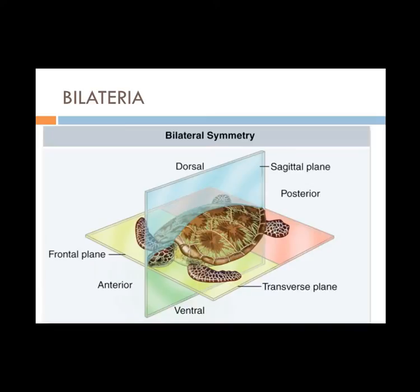The bilaterians are all the other phyla. They have bilateral symmetry, which means you can divide their bodies into a plane from head to tail. They have a dorsal side, which is the top, a ventral side, which is the bottom, an anterior head, and a posterior tail. They also have left and right sides. Bilateria is associated with cephalization, which is a concentration of sense organs at the anterior end.